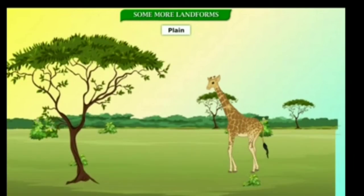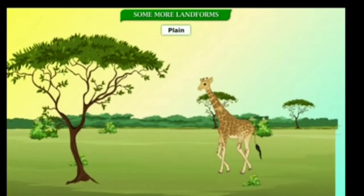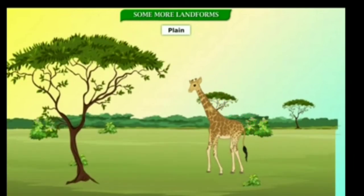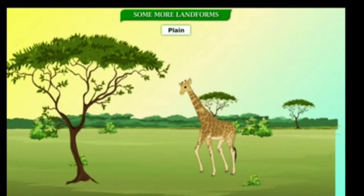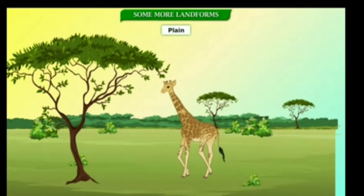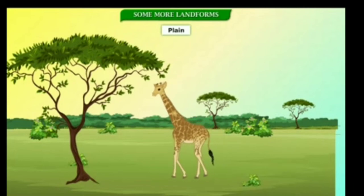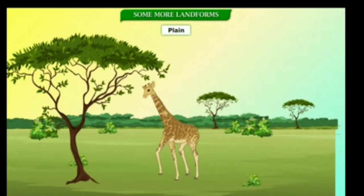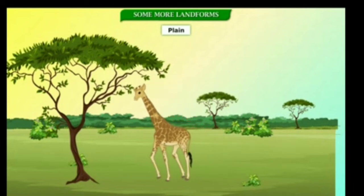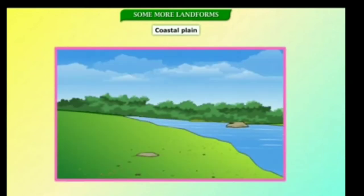Plains are flat areas. They have very rich and fertile soil. They are usually densely populated as they are suitable for cultivation of various crops. Coastal plains are found along the borders of continents or along the coasts of seas or oceans.